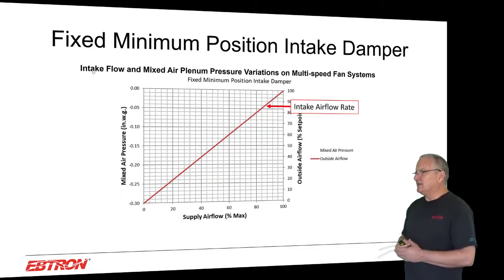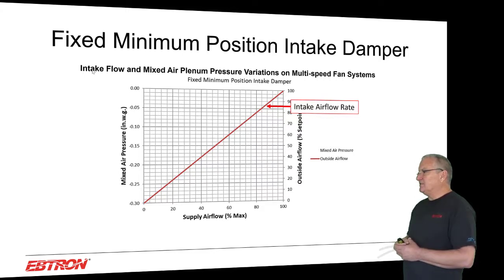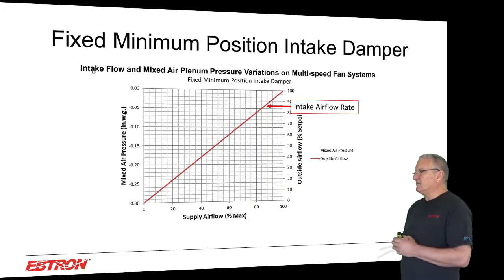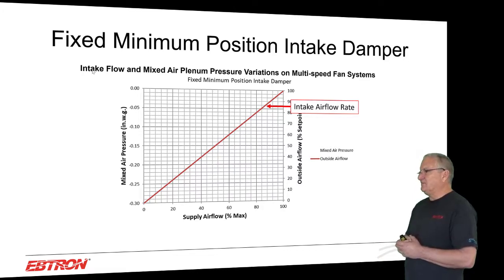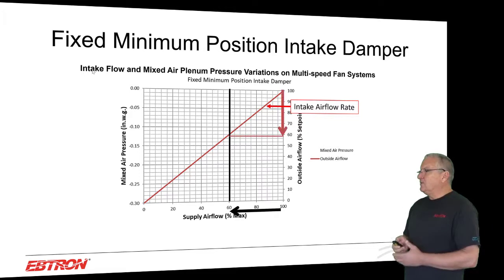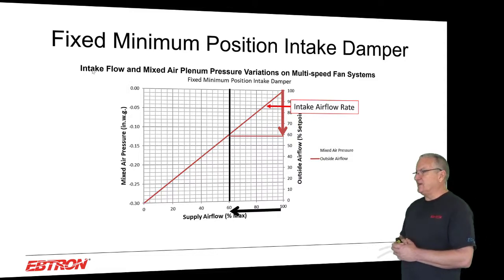Graphically, on the horizontal axis we have supply flow from zero to 100%, and on the right vertical axis we have outside airflow from zero to 100% of our set point. We set the system up at 100% supply fan airflow — that's 100% of our set point. With a fixed damper system, if we reduce supply airflow by 40%, the outdoor air drops from 100% to 60% of where it was. That was a big problem recognized back in this 1990 paper. Multi-speed constant volume systems have the same problem.